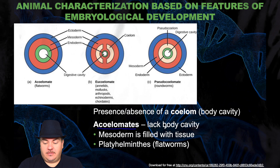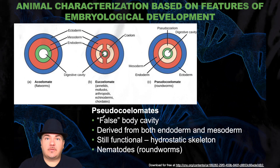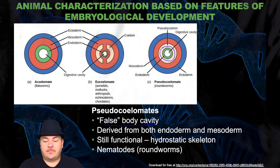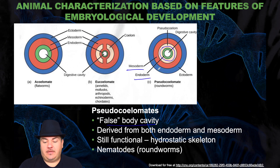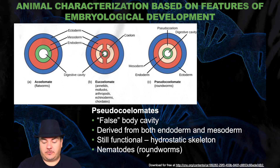The acoelomates lack a body cavity. An example of an acoelomate would be a flatworm — it does not have a fluid or gas filled cavity inside, and the mesoderm is filled with tissue. Then we have the pseudocoelomates, which have a false body cavity. They do have a body cavity inside, shown here in the light shaded beige area, but it's between the endoderm and the mesoderm. An example of a pseudocoelomate organism is roundworms.